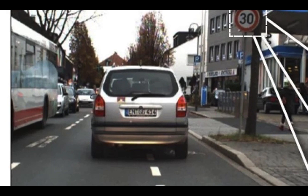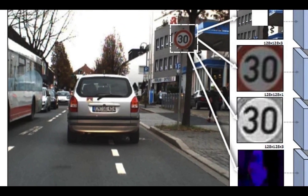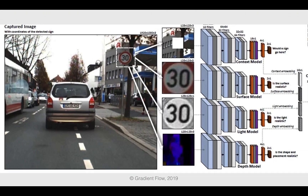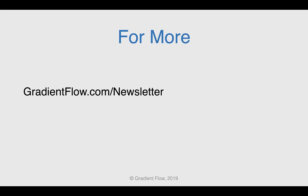Nasi proposes a new method that uses the vehicle's camera sensor to determine whether a detected object is real or phantom. This method reduced the attack success rate on seven state-of-the-art road sign detectors to 0.01%. See Gradient Flow newsletter number 20 for more.